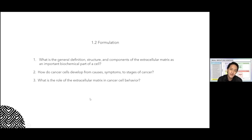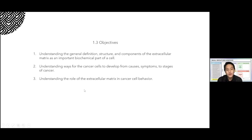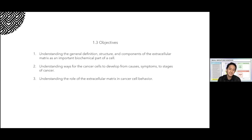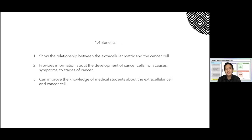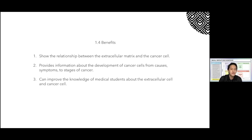Third, what is the role of the extracellular matrix in cancer cell behavior? We also have three objectives: understanding the general definition, structure, and component of the extracellular matrix; understanding how cancer cells develop from causes, symptoms, to stages; and understanding the role of the ECM in cancer cell behavior. The benefits show the relationship between ECM and cancer cells, provide information about cancer development, and improve medical students' knowledge about ECM and cancer.